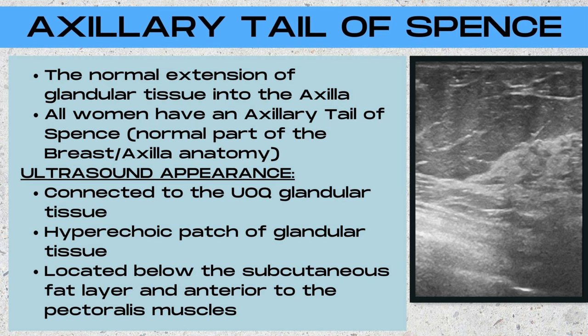The axillary tail of Spence tissue is located below the subcutaneous fat layer and anterior to the pectoralis muscles, just like normal glandular tissue. When you encounter glandular breast tissue in the axilla, ask yourself two questions. First: is it connected to the upper outer quadrant tissue? If it is, it's the axillary tail of Spence. If it's a separate patch of tissue not connected to the upper outer quadrant tissue, then it's accessory tissue. Second: what is its depth on the ultrasound image? The axillary tail of Spence is located below the subcutaneous fat layer and anterior to the pectoralis muscles, while accessory breast tissue is very superficially located — directly below the skin line and above the subcutaneous fat layer.